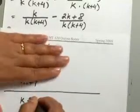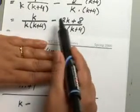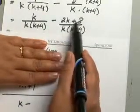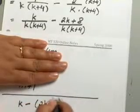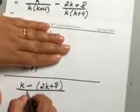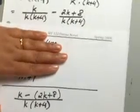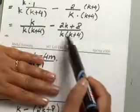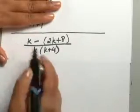K minus, again, remember to put this in parentheses. You're doing K minus 2K plus 8, so put the 2K plus 8 into parentheses, and now you can write this whole thing with its common denominator of K over K plus 4. So here you have K over K plus 4, 2K plus 8 over K plus 4. When you combine it together, it's important that you put that in parentheses.